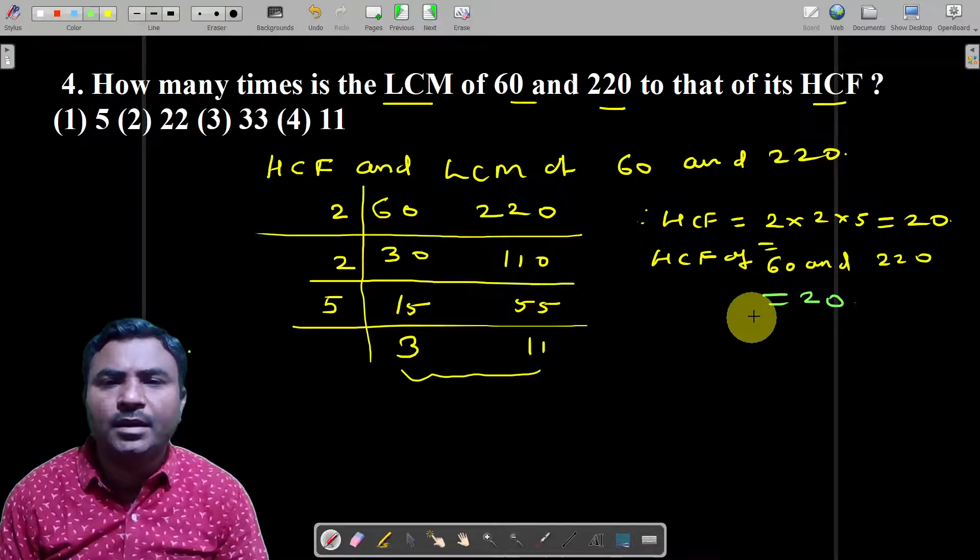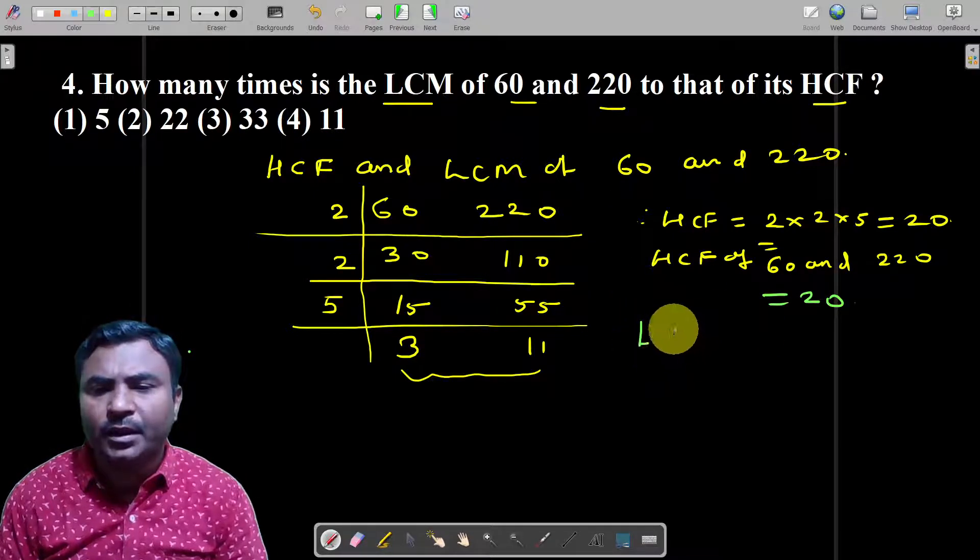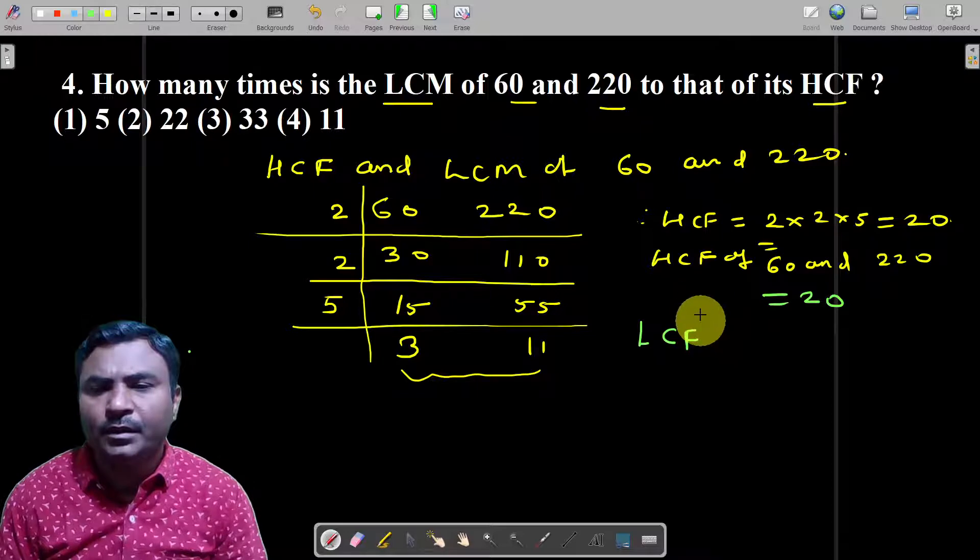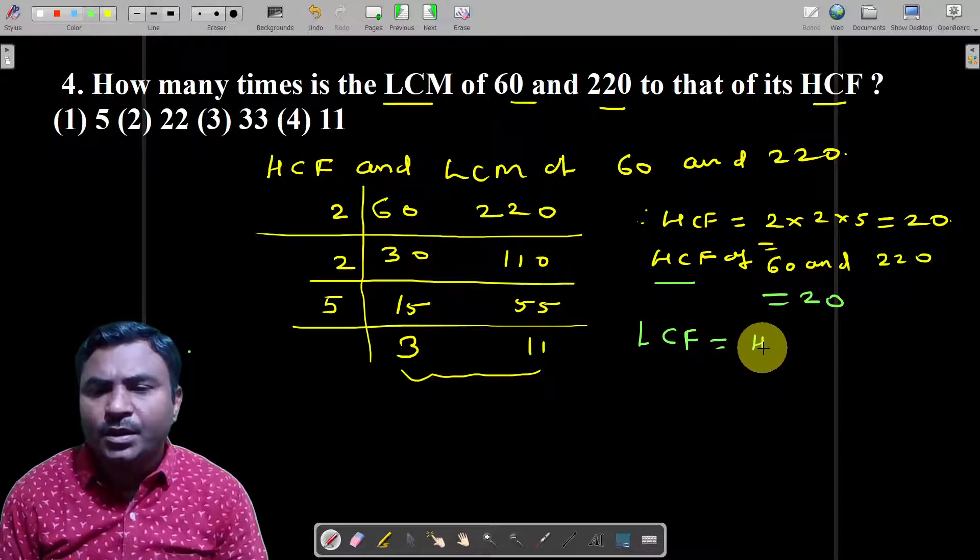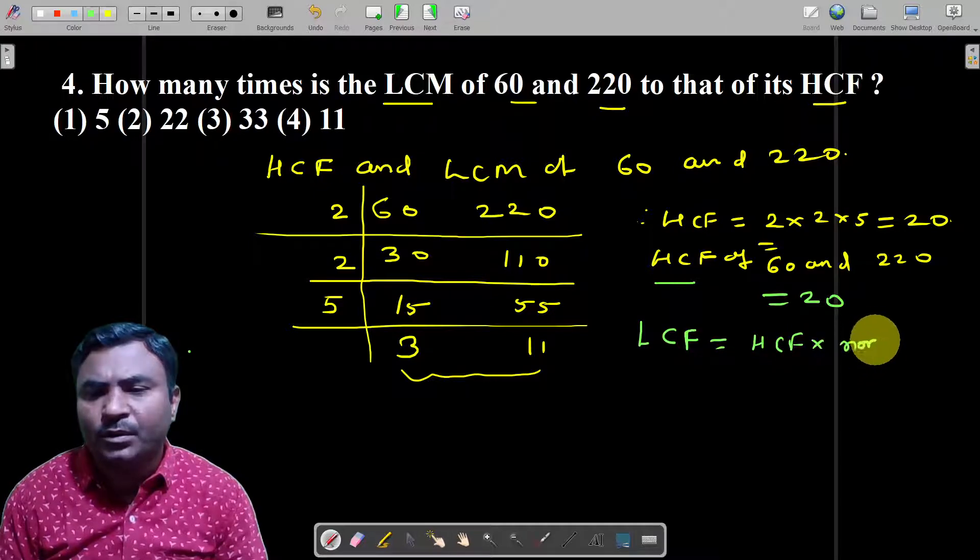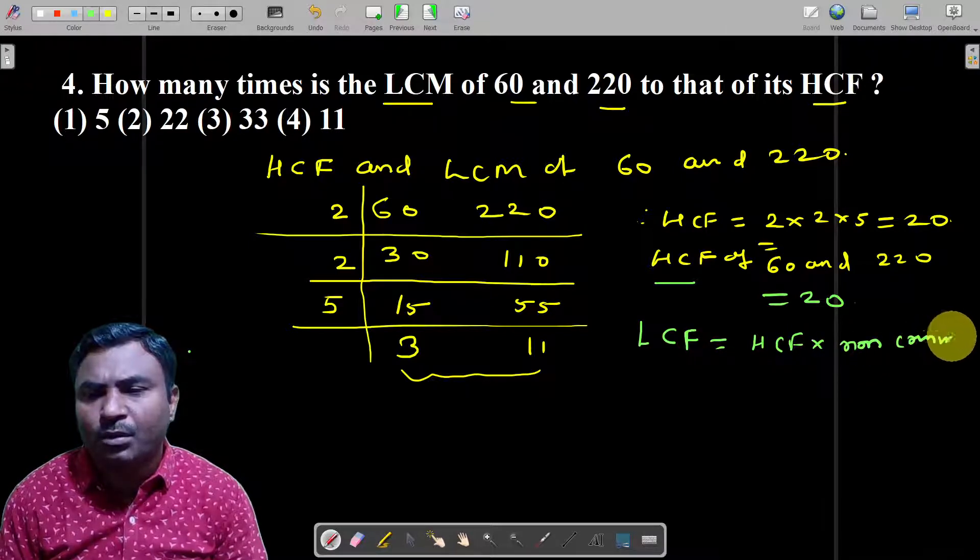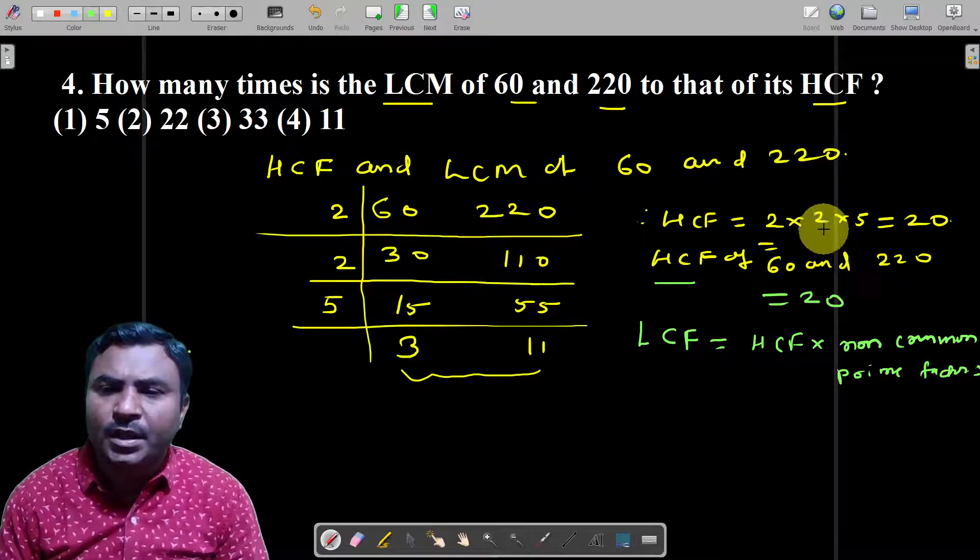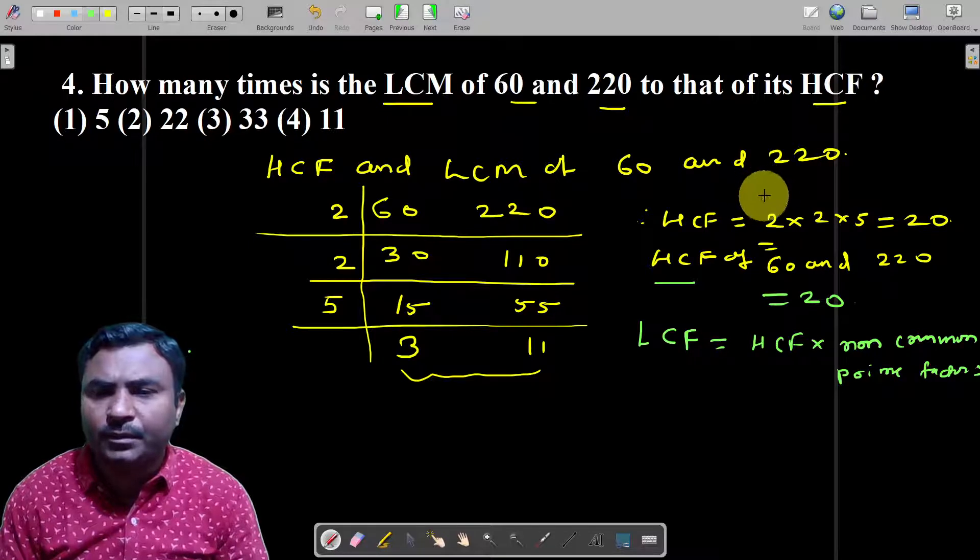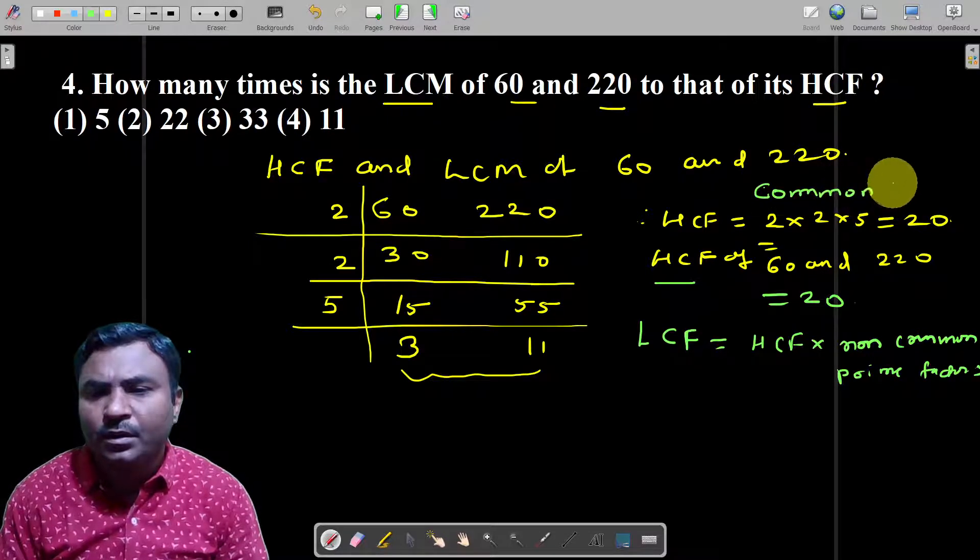Then find out the LCM, which means HCF multiplied by non-common factors, non-common prime factors. LCM is called common prime factors multiplied by non-common factors.